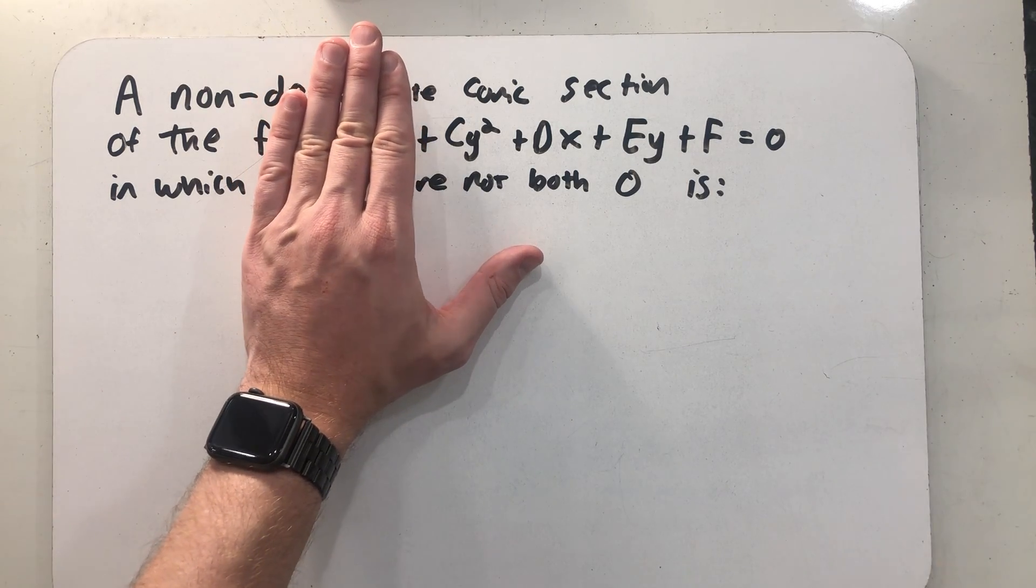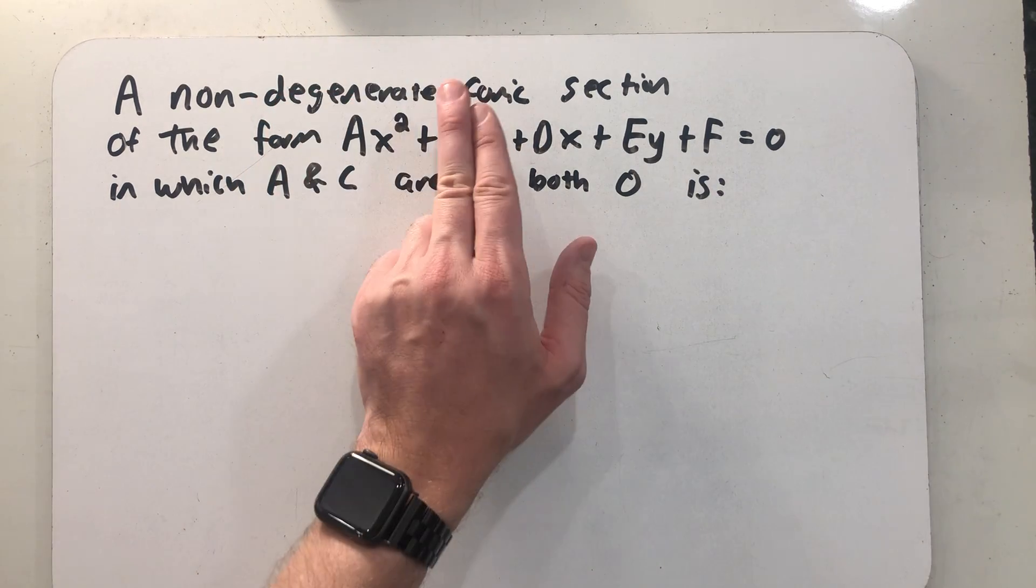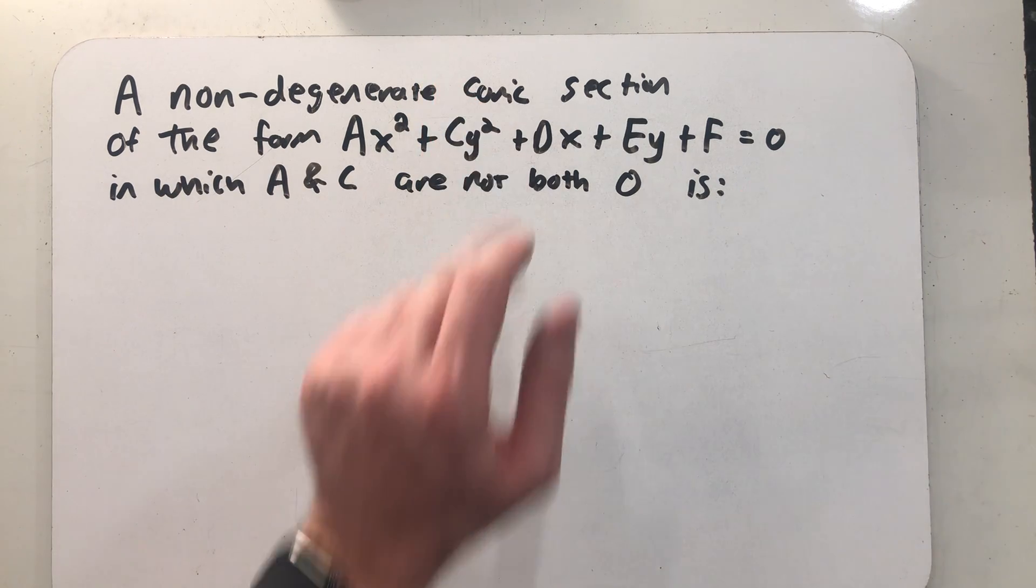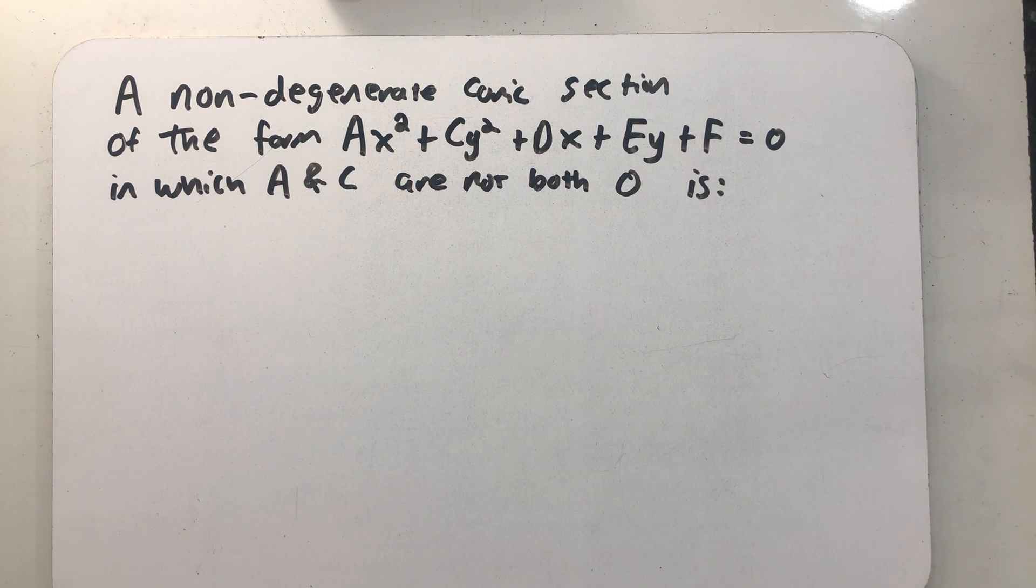If a is zero, then we still have a parabola. If c is zero, then we still have a parabola, and we'll write these rules down just for a moment.